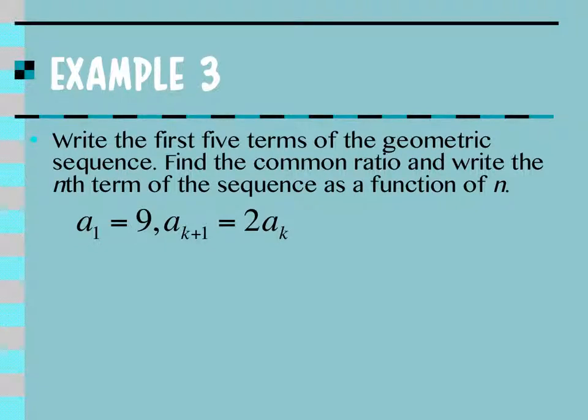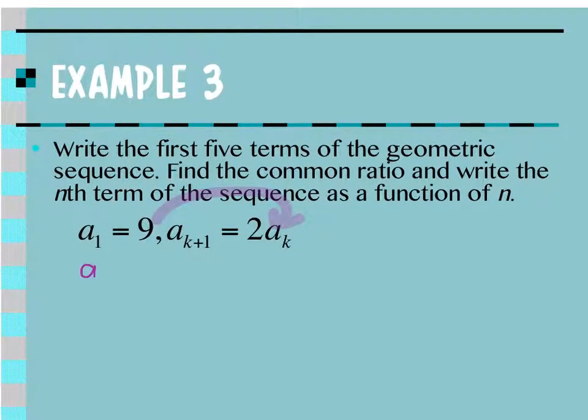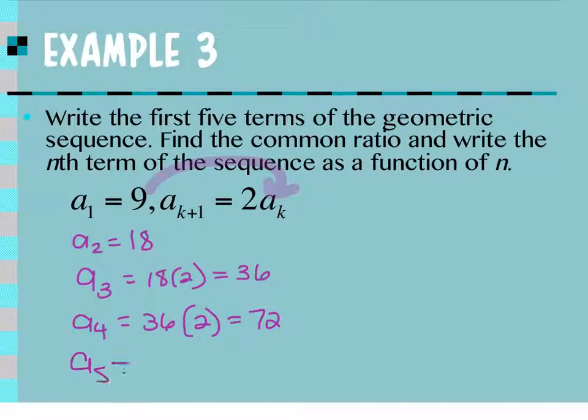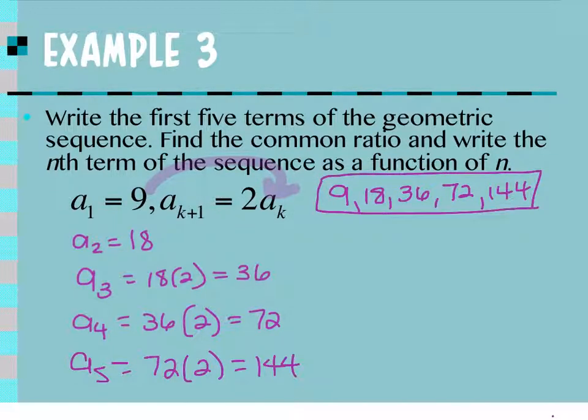So example three says write the first five terms of the geometric sequence, find the common ratio, and then write the nth term of the sequence as a function of n. So this time it's recursive to begin with, but it wants us to use that to get the first five terms. So if I'm taking 9 and multiplying it by 2, then a sub 2 is 18. Take 18 and multiply it times 2. A sub 3 is 36. Take 36 and multiply it times 2. And a sub 4 is 72. Take 72 and multiply it times 2. And a sub 5 is 144. So first five terms of the sequence would be 9, 18, 36, 72, and 144. And then it says find the common ratio. So what am I multiplying? 9 by to get to 18, 18 by to get to 36, 36 to 72, and 72 to 144. 2. R is 2.